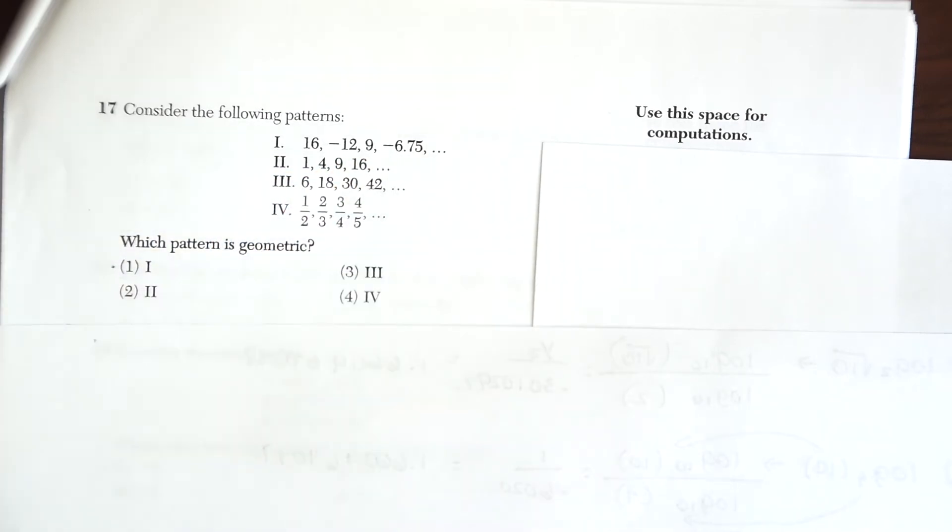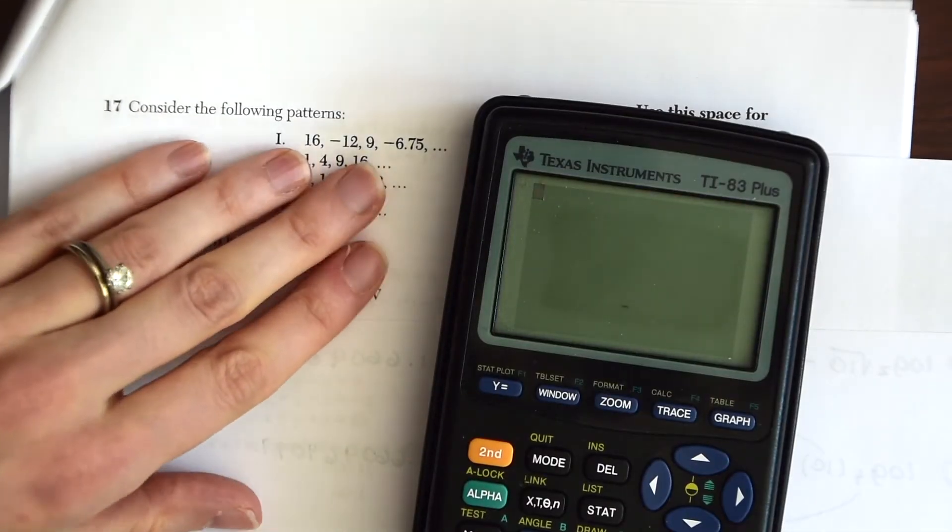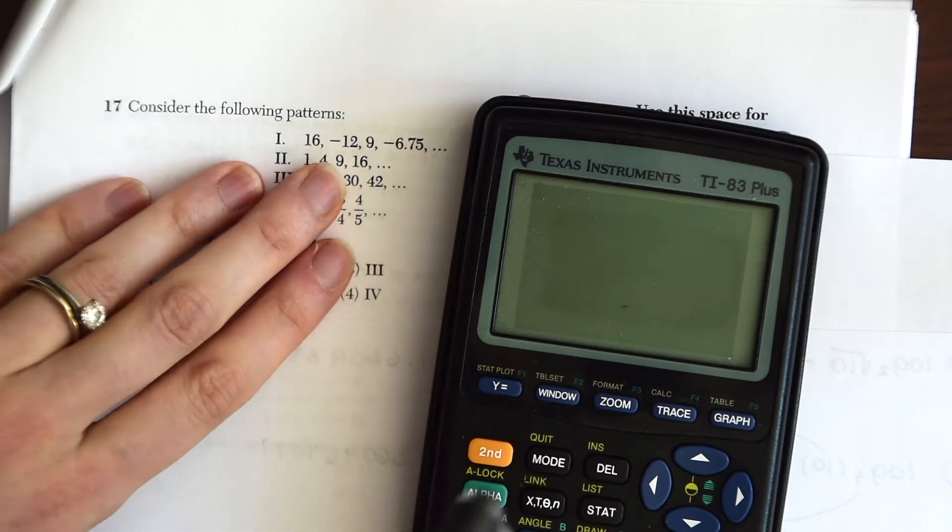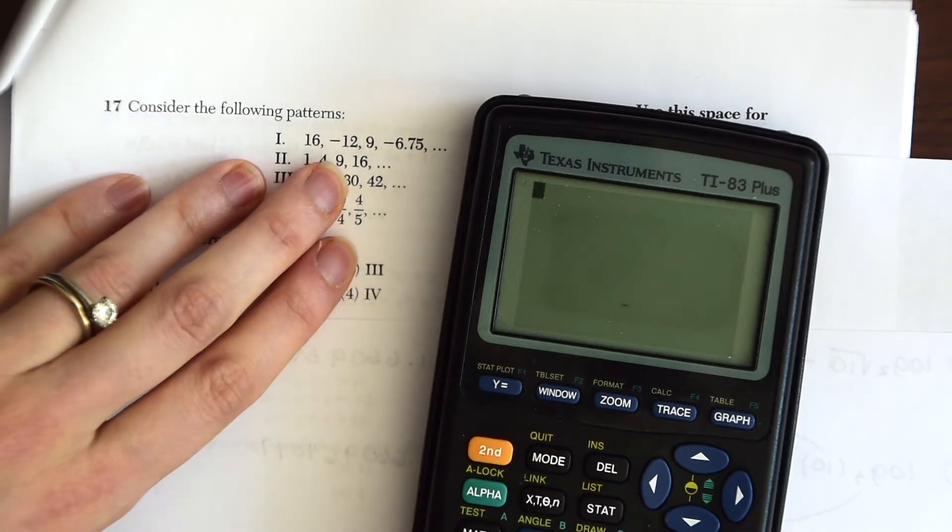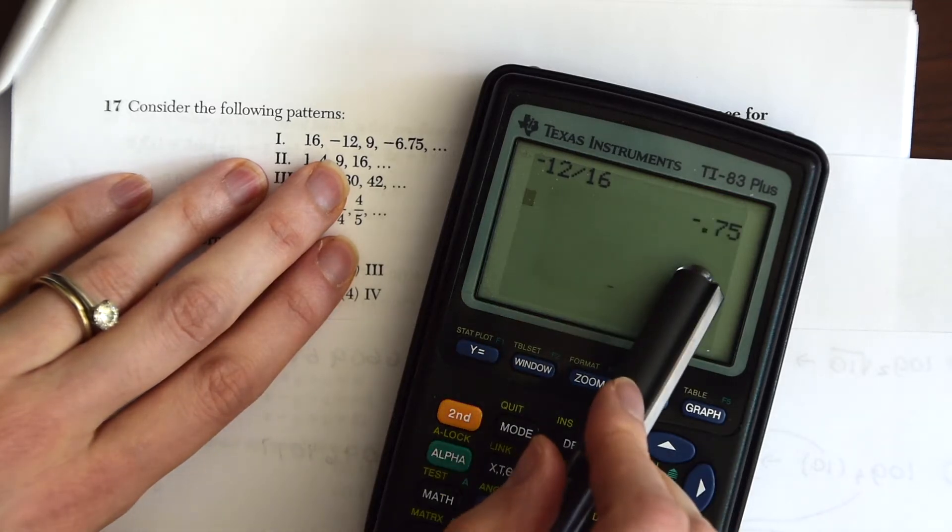So that's what we're going to be looking at. We're going to want to go through each one to make sure we have the right one. So let's just plug in our calculator and look at choice number one. If we go from 16 to negative 12, so let's just do negative 12 divided by 16, we get negative 0.75.